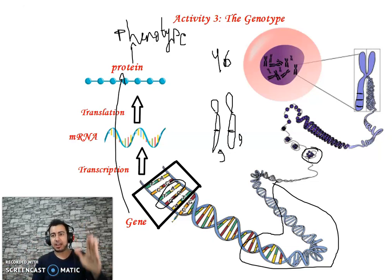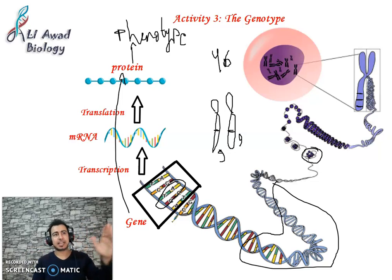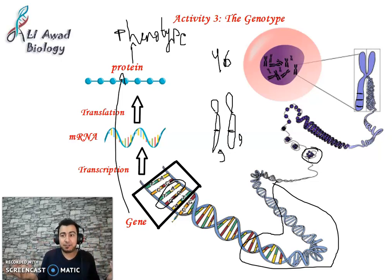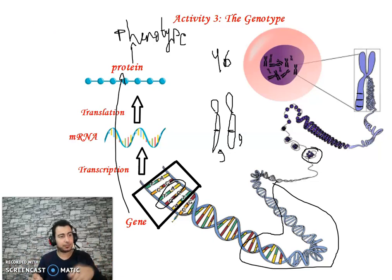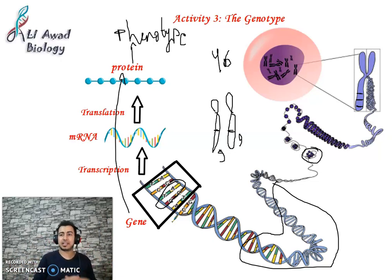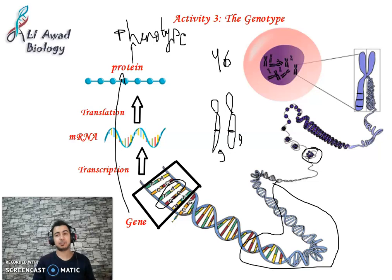The gene for eye color that gives blue eyes is certainly different from the DNA that gives black eyes, which is different from the DNA that gives brown eyes, etc. All are called the gene of color of eyes, but the DNA sequences are different.